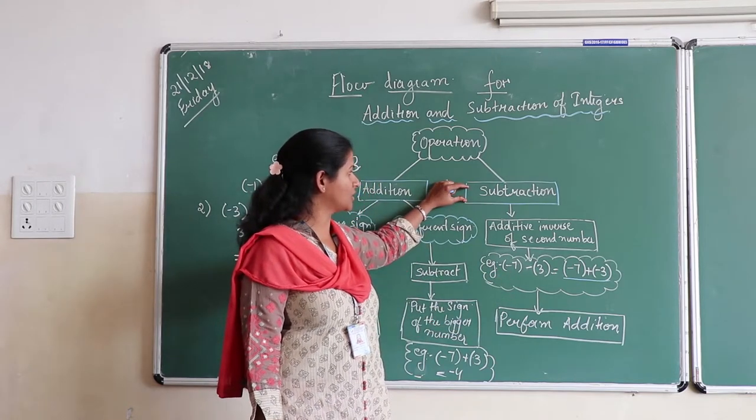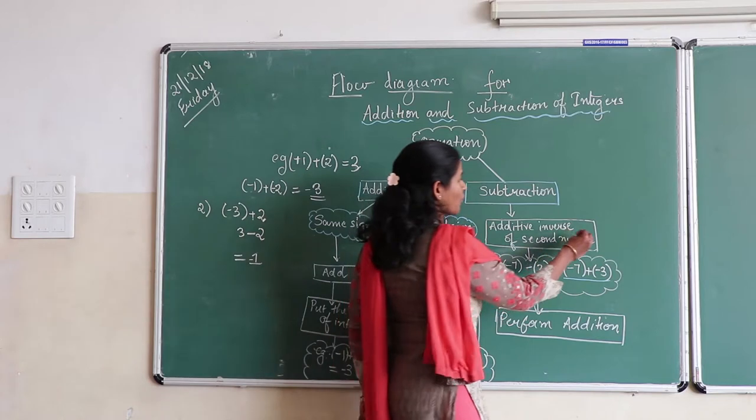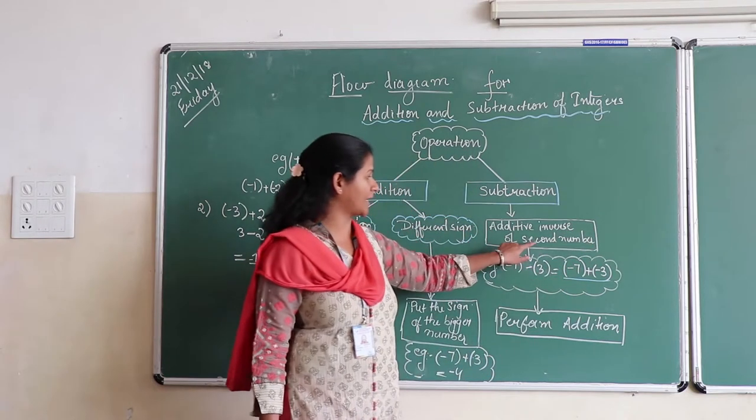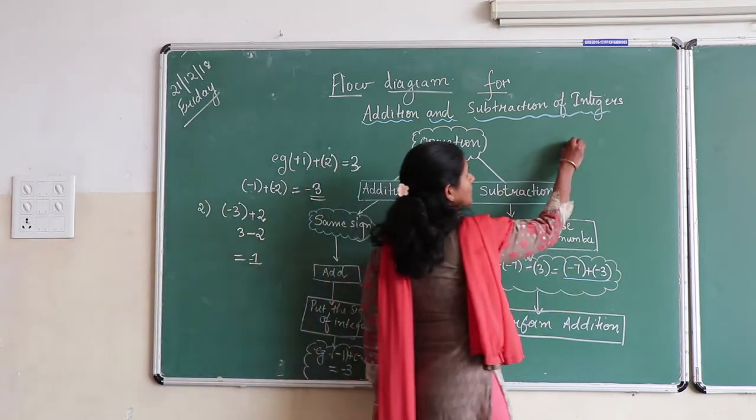To subtract two integers, the first step that we perform is additive inverse of the second number. So let's take a quick example.